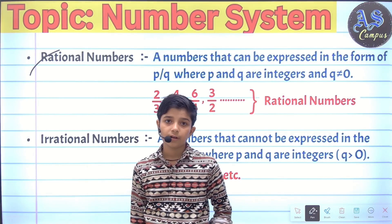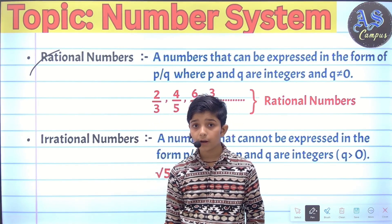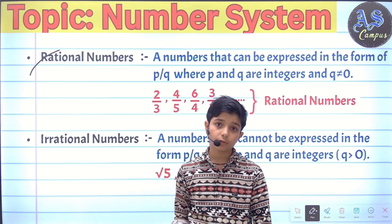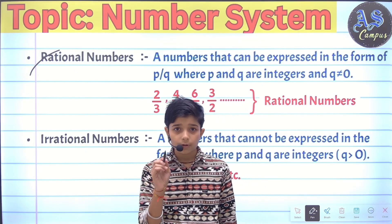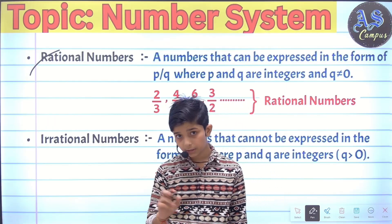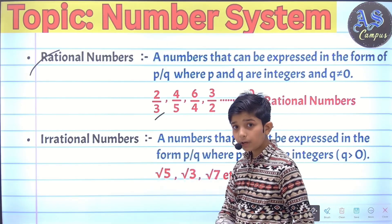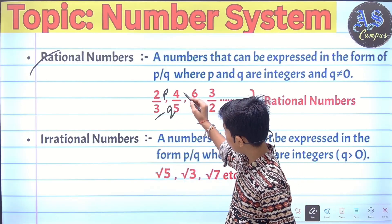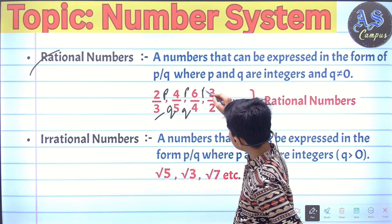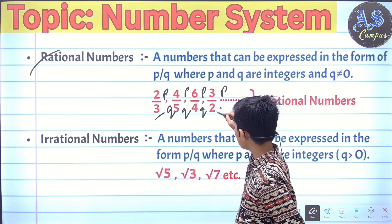Rational numbers: A number that can be expressed in the form of p by q, where p and q are integers and q is not equal to zero. Do you know what is p and what is q? P is numerator and q is denominator. Like 2/3, in this example 2 is p and 3 is q. 4 is p and 5 is q. 6/4, 6 is p and 4 is q. 3/2, 3 is p and 2 is q.